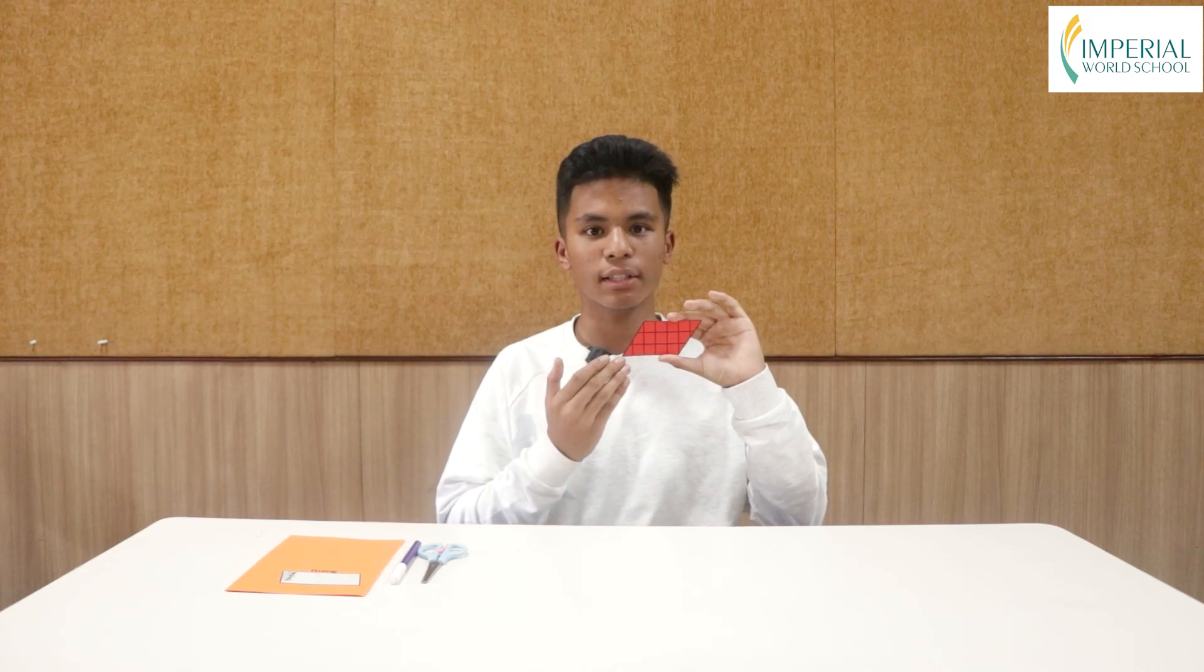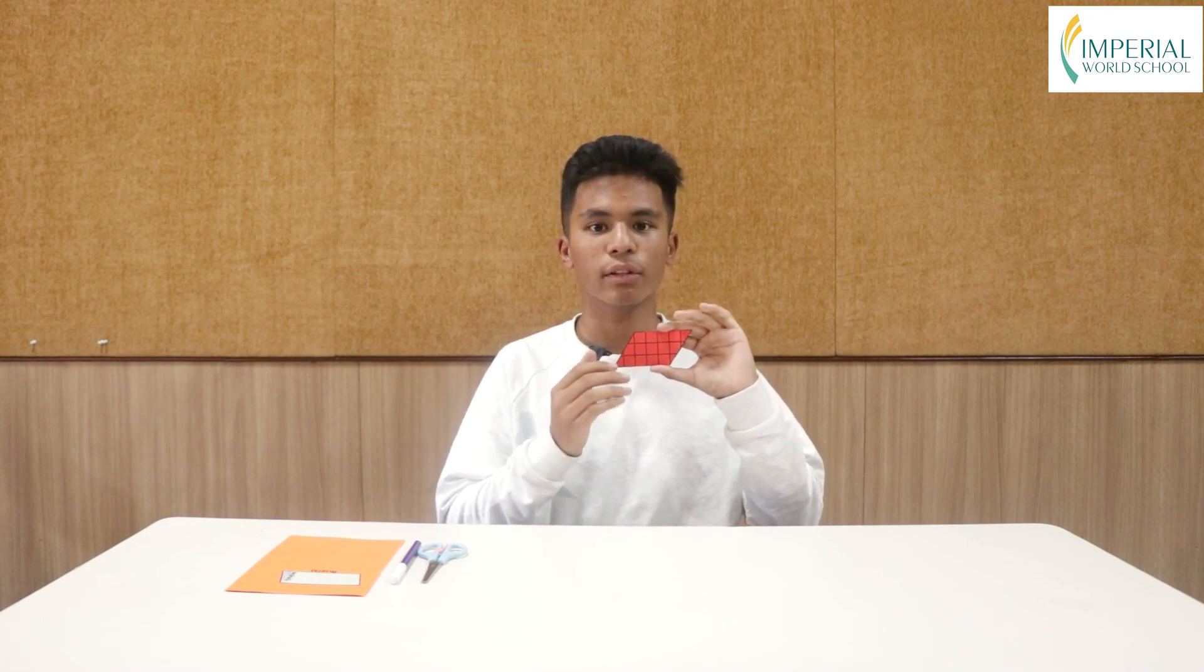Here I have a parallelogram with 5 units as the base (1, 2, 3, 4, 5) and 3 units as the height (1, 2, 3). With this we know the opposite sides of a parallelogram are equal.